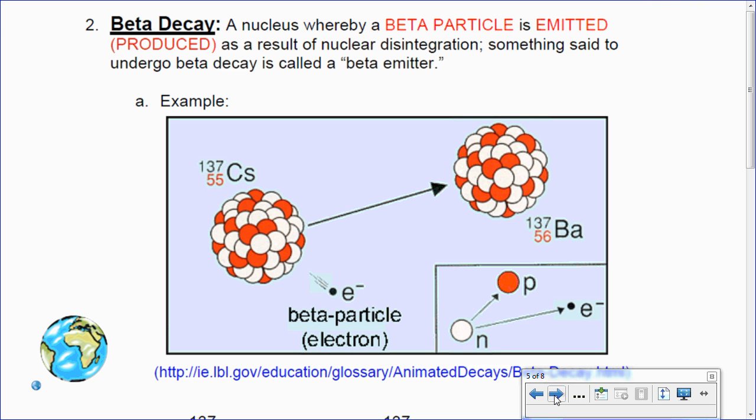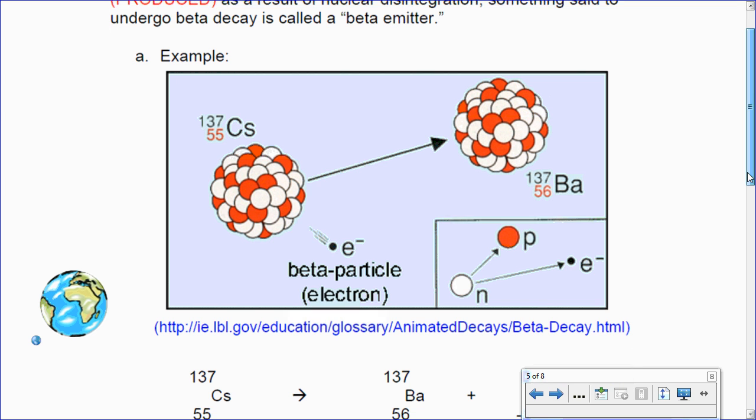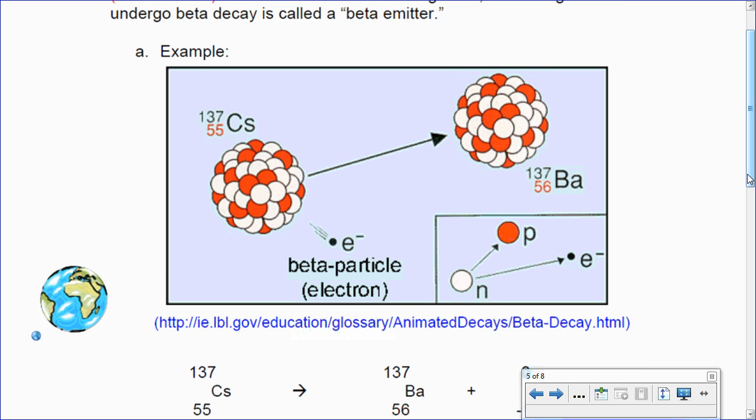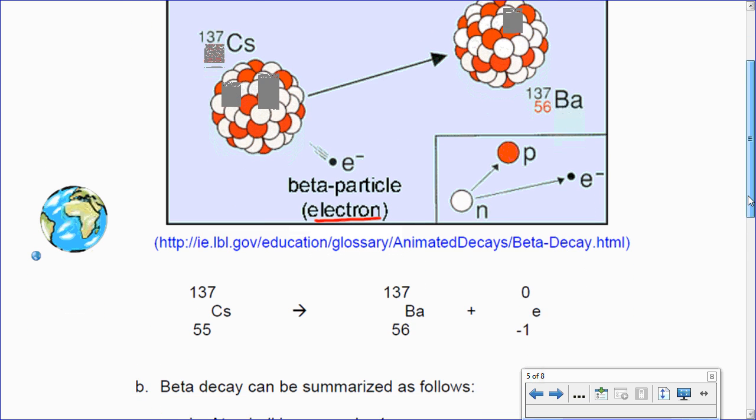Beta decay is the second type of radioactive decay. It's a nucleus where a beta particle is emitted or produced as a result of a nuclear disintegration. So, something said to undergo beta decay is called a beta emitter. So, alpha decay, alpha emitters, beta decay, beta emitters. Sometimes they can do both, but we're not really going to see those examples. So, cesium, in this example, cesium-137 with an atomic mass of 55 turns into barium-137 with a mass of 56. What? It got heavier? How is that possible? Well, the way that it's possible is the electron that it emits has a negative charge. Beta emission is like, it's weird, like a neutron turns into a proton kind of thing going on there.